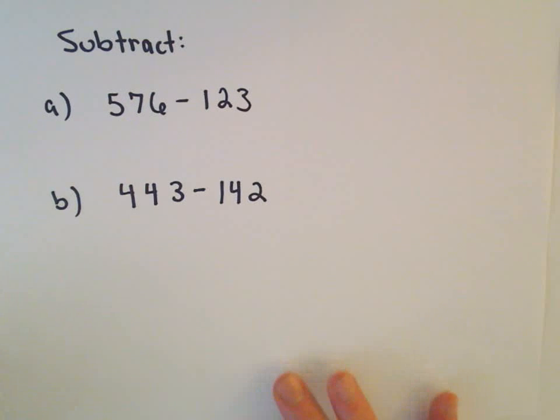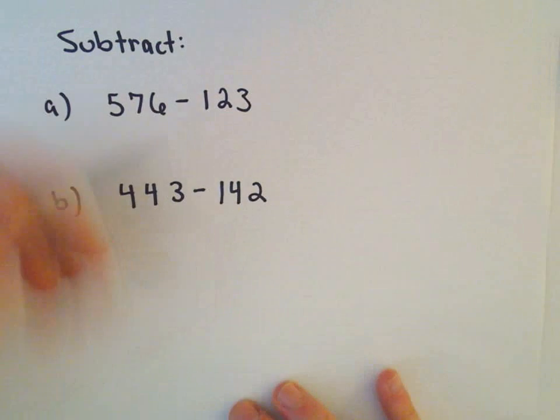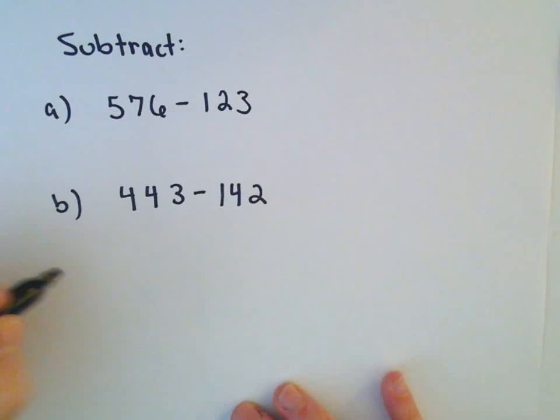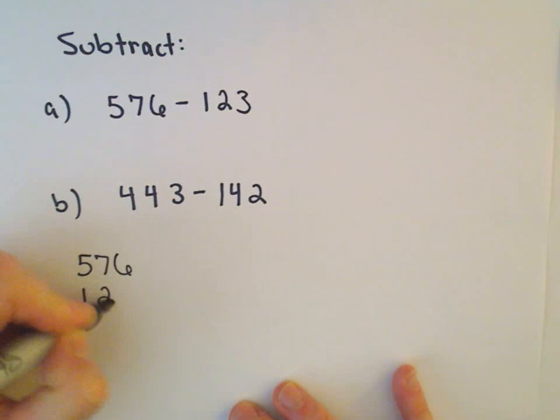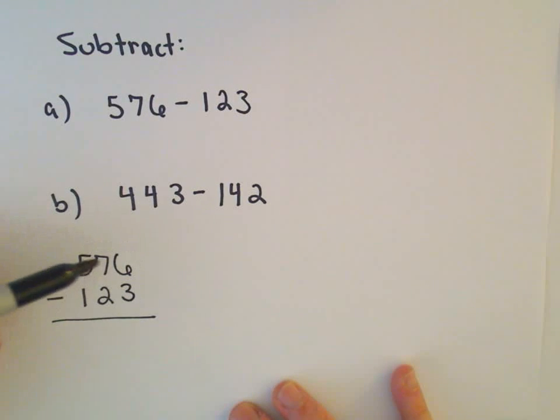So just like with addition, I like to write these up and down vertically. So I'm going to do part A first, we'll do both in this video. So 576 minus 123, and again notice we have everything lined up - the hundreds, the tens, etc.